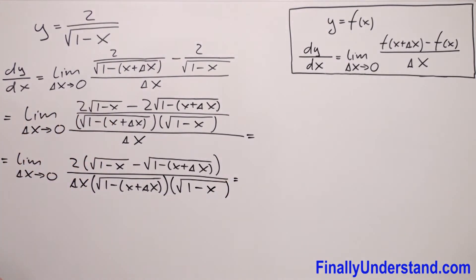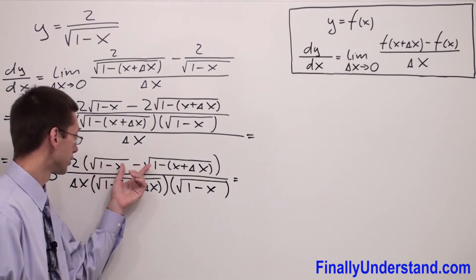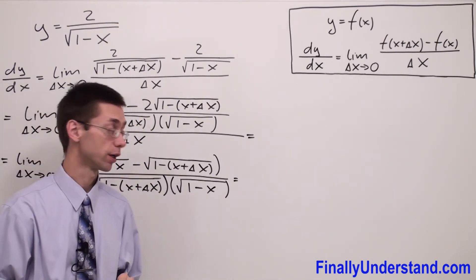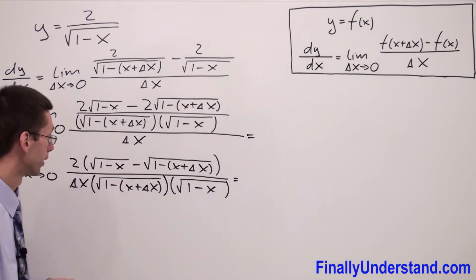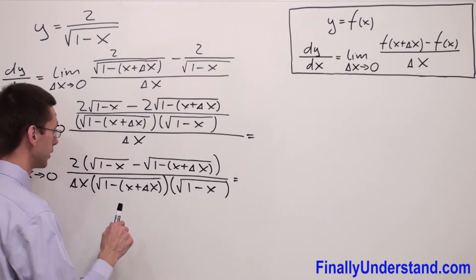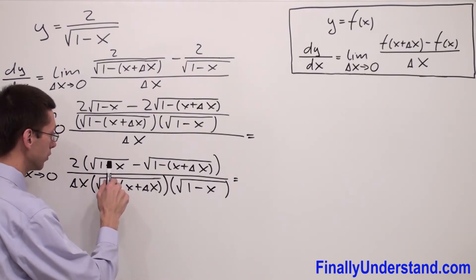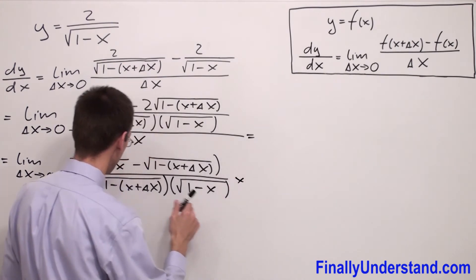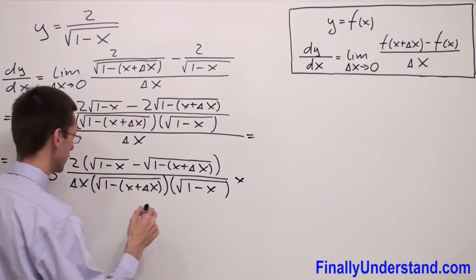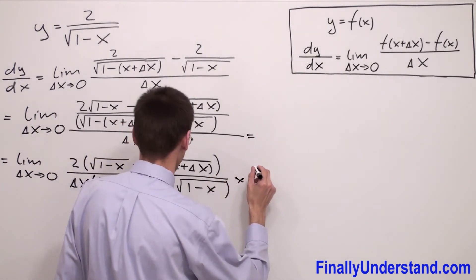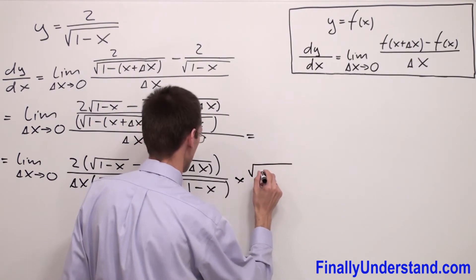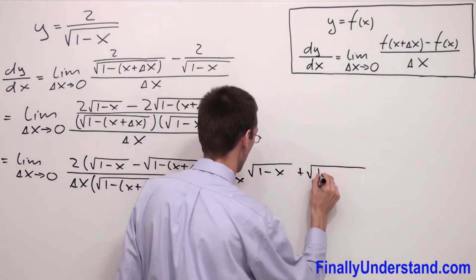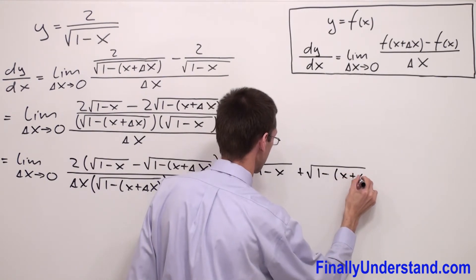Please notice that in the numerator we have the difference of two terms with square roots. So what we are going to do is eliminate these square roots by multiplying the numerator and denominator by the conjugate of the numerator. We multiply by square root of (1 minus x) plus square root of (1 minus x plus delta x).